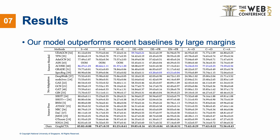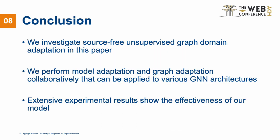We compare GRAPHTA with baselines including no-adaptation, source-needed, and source-free domain adaptation approaches. The experimental results demonstrate that our proposed model outperforms recent source-free baselines by large margins. We investigate source-free and unsupervised graph domain adaptation in this paper. We perform model adaptation and graph adaptation collaboratively, which can be applied to various GNN architectures. Extensive experimental results show the effectiveness of our model.